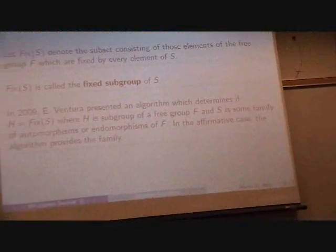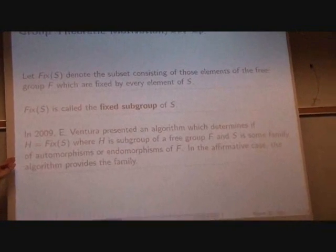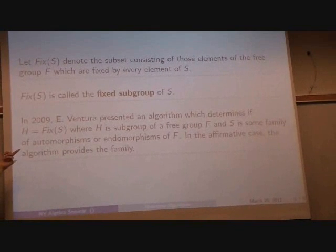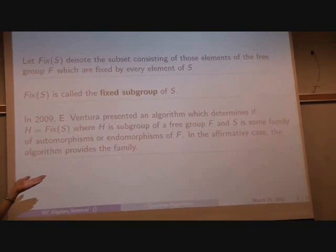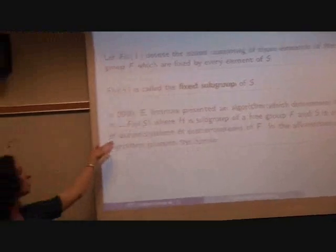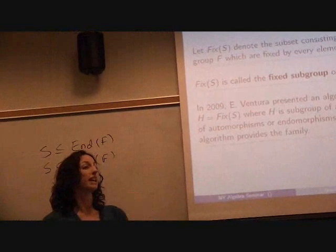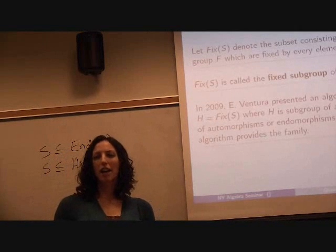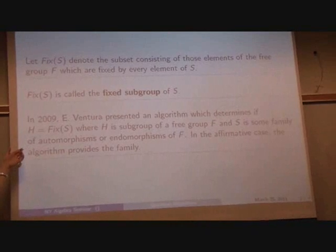In 2009, Ventura presented an algorithm which determines whether or not H, which is a subgroup of our free group F, is equal to fixed S for some S, which is either a set of automorphisms or endomorphisms. In the affirmative case where he finds that H is in fact equal to this fixed S, he provides the S, the set of automorphisms or the set of endomorphisms. For our purposes, since we wanted to rely on quantum search procedures to help us solve this particular version of the question, we had to reformulate it a little bit.